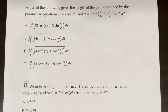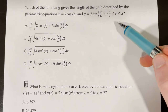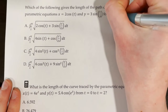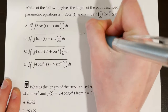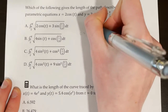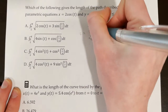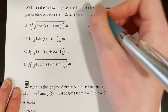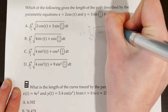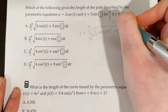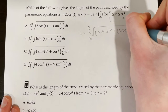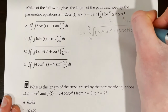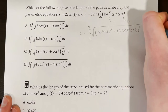Next: which expression gives the length of the path for x = 2cos(t) and y = 3sin(t/3), for π/2 ≤ t ≤ π? Our lower bound is π/2 and upper bound is π. We compute dx/dt = −2sin(t), and for dy/dt we use the chain rule on 3sin(t/3): that gives 3·cos(t/3)·(1/3). We square each term and place dt on the end.